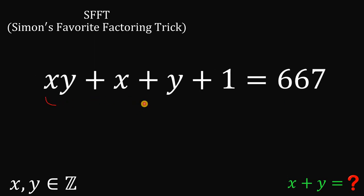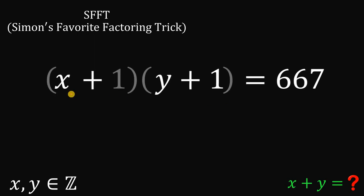And now, take note, the left-hand side of our equation, xy plus x plus y plus 1, is definitely factorable. Now, if we factor this, we get something like (x plus 1) multiplied by (y plus 1).